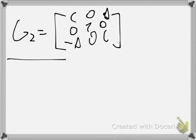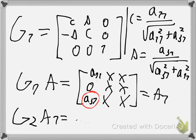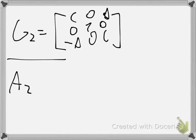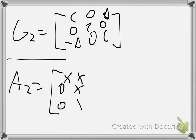Now we have some matrix — let's call it A2 — with the following form. Now we want to eliminate the next element.